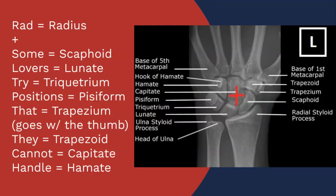Then I move to the distal row of the carpal bones, resetting back to the lateral side: trapezium — one way to remember this is that the trapezium goes with the thumb. Also remember that if you were swinging on a trapeze it would be nice to have a thumb to hold on. So: trapezium, trapezoid, capitate — the largest wrist bone that we want centered on — and then the hamate. The hook of the hamate is also palpable.